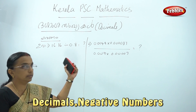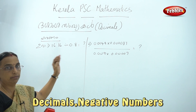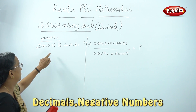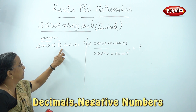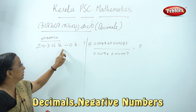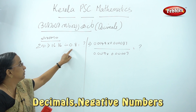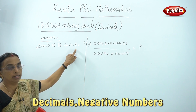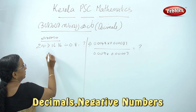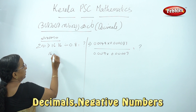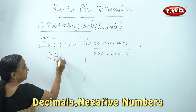Now, we have a different type of questions. One is 16.1, we have 0.8. Now, we have 0.8. That's why we have 16.1 by 0.8.